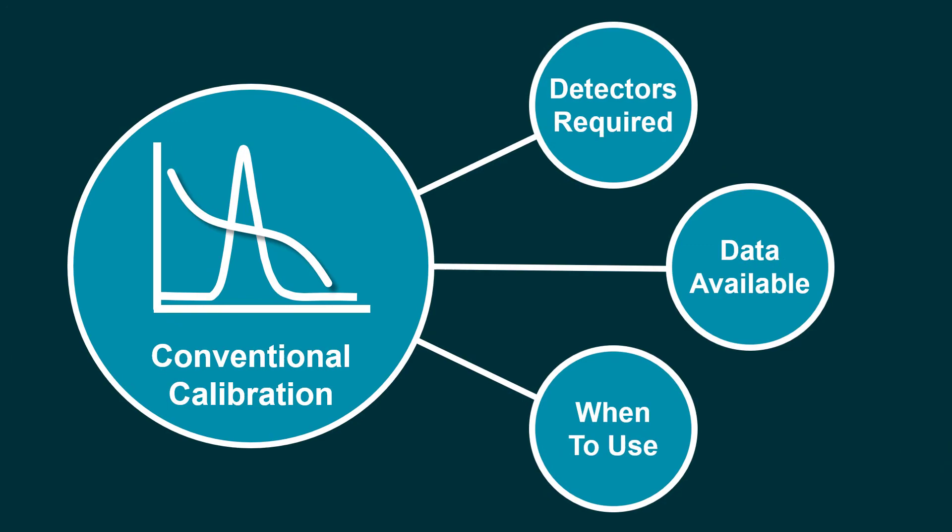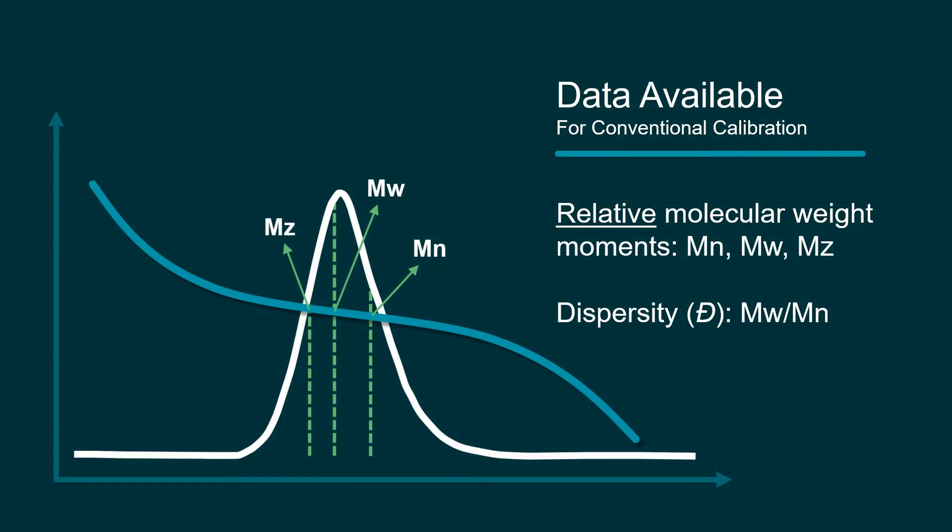The data available from conventional calibration are limited to molecular weight moments. Since these are calculated based on the calibration curve, they're described as relative molecular weight values. Their accuracy depends on how structurally similar your sample is to your standards.